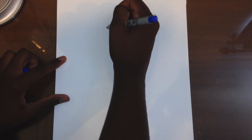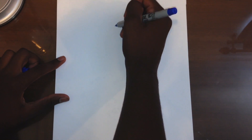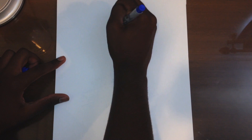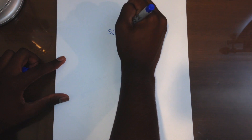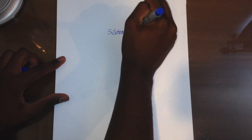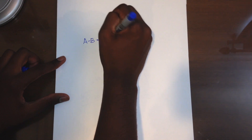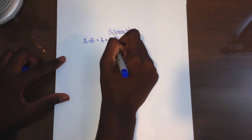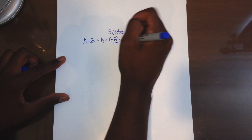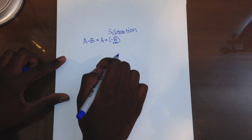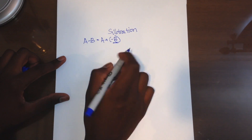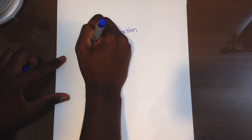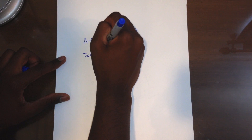So we already know how to do addition. The question becomes, how do we do subtraction? As we said before, A minus B is the same thing as A plus negative B. So how do we convert number B into its negative form? The way we do this is using something called the 2's complement.